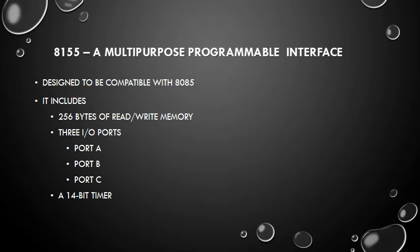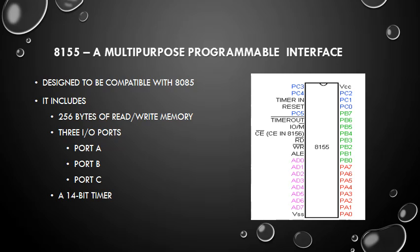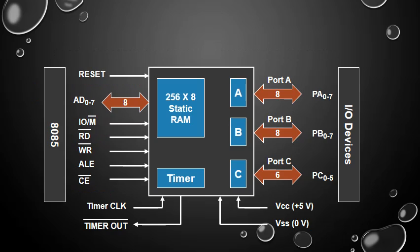8155 is a multi-purpose programmable interface designed to be compatible with 8085. It includes 256 bytes of read/write memory, three input/output ports — Port A, Port B, and Port C — and a 14-bit timer. You can see the pin diagram of 8155 on the right side.